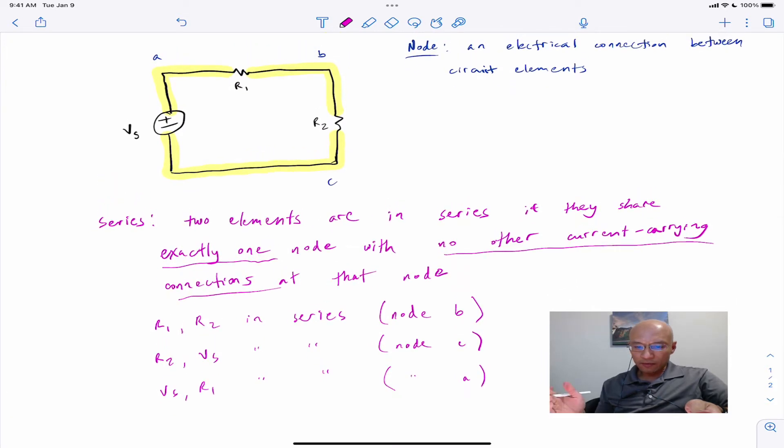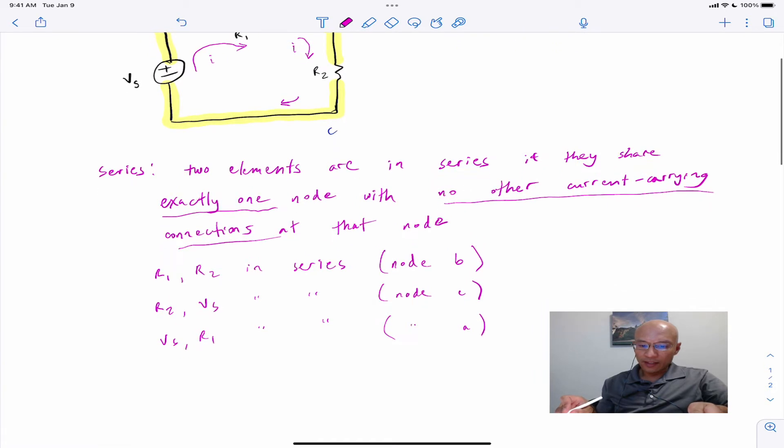One consequence of elements connected in series is that if you have a current flowing through the circuit, let's call it I, that's leaving the voltage source. Well, that I flows through R1 and no more and no less can leave R1. So every bit of current that enters R1 has to leave R1. This is a consequence of the conservation of charge. So every bit of current leaving R1 is the same current that enters R2, and it's the same current that leaves R2.